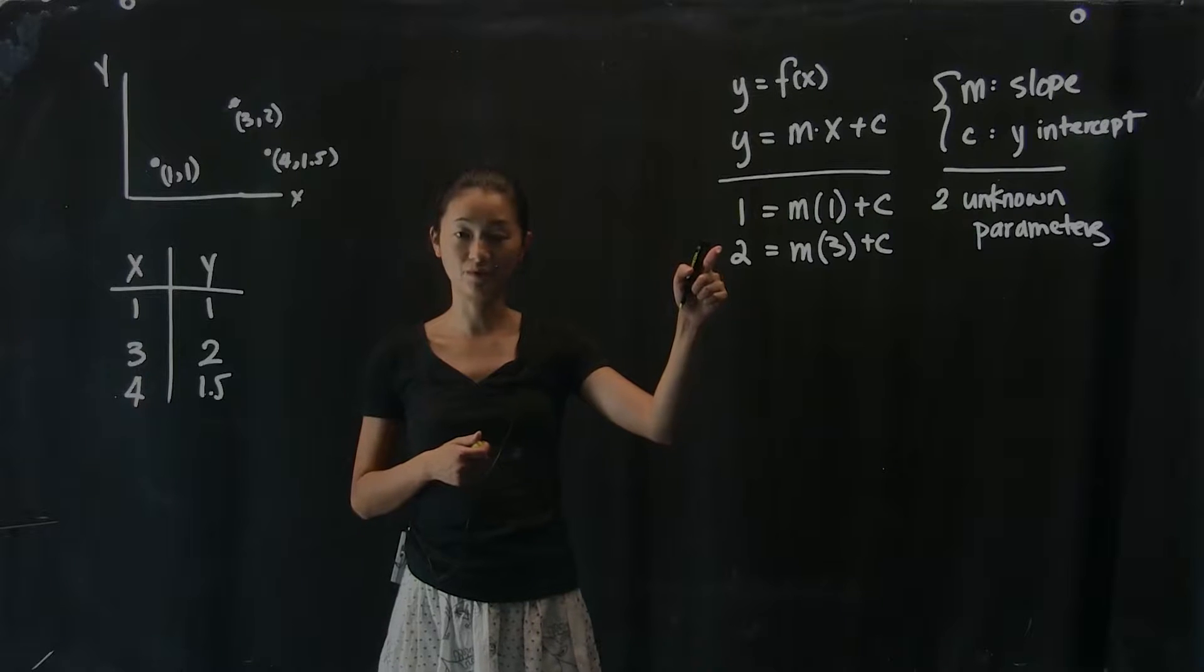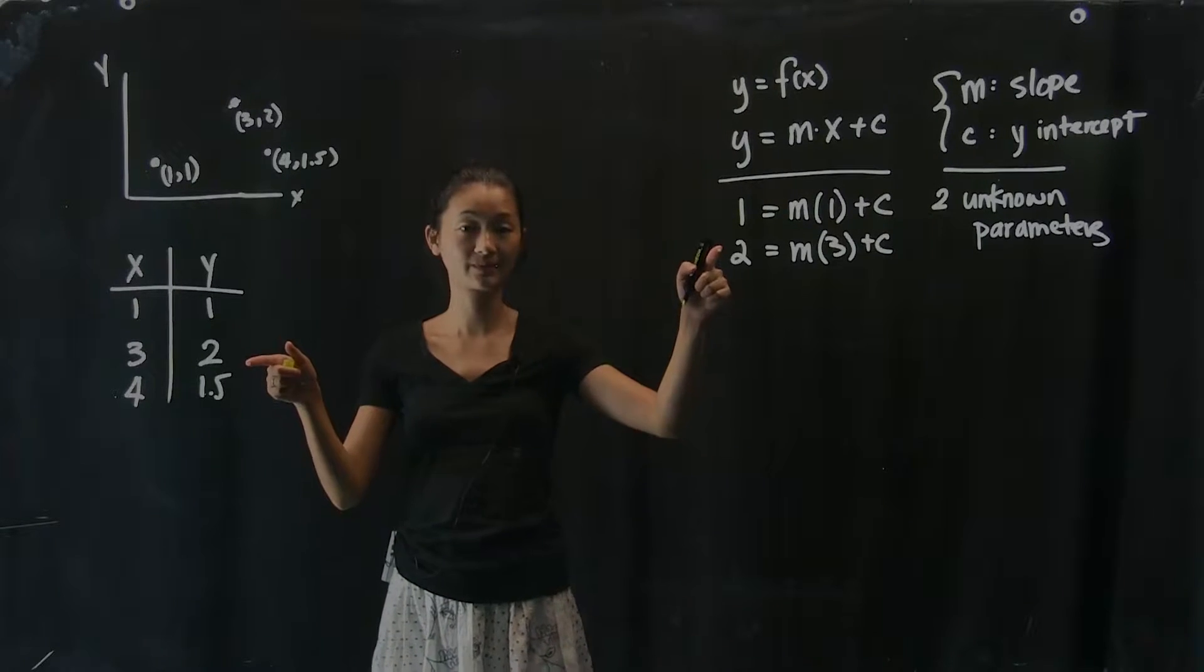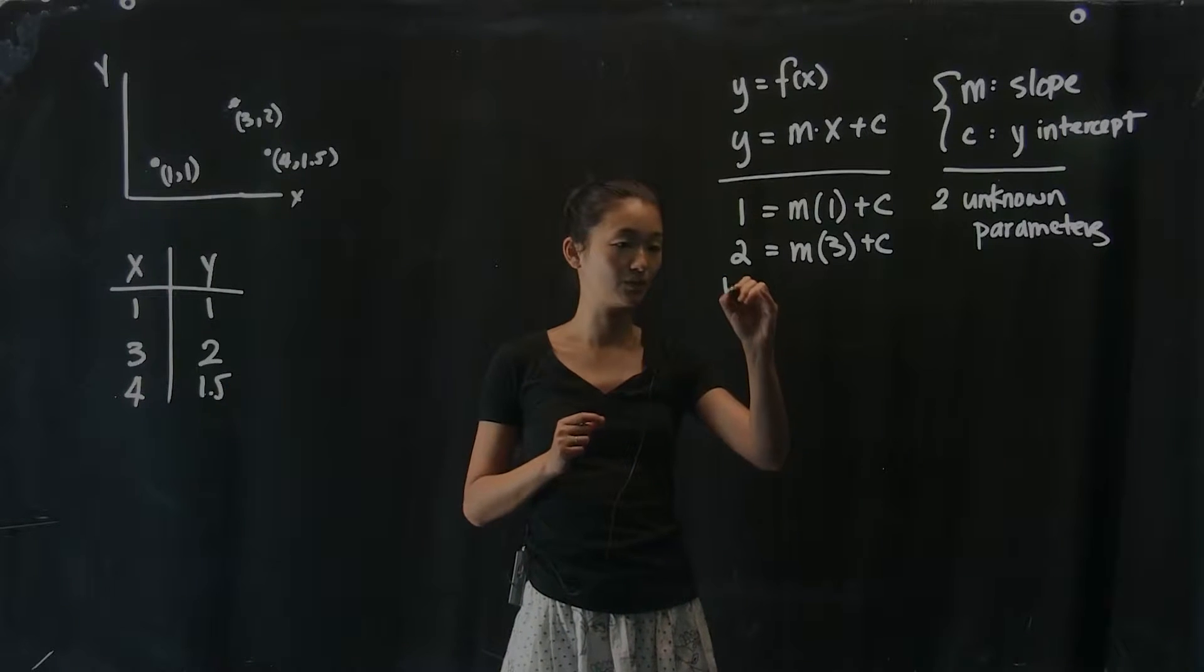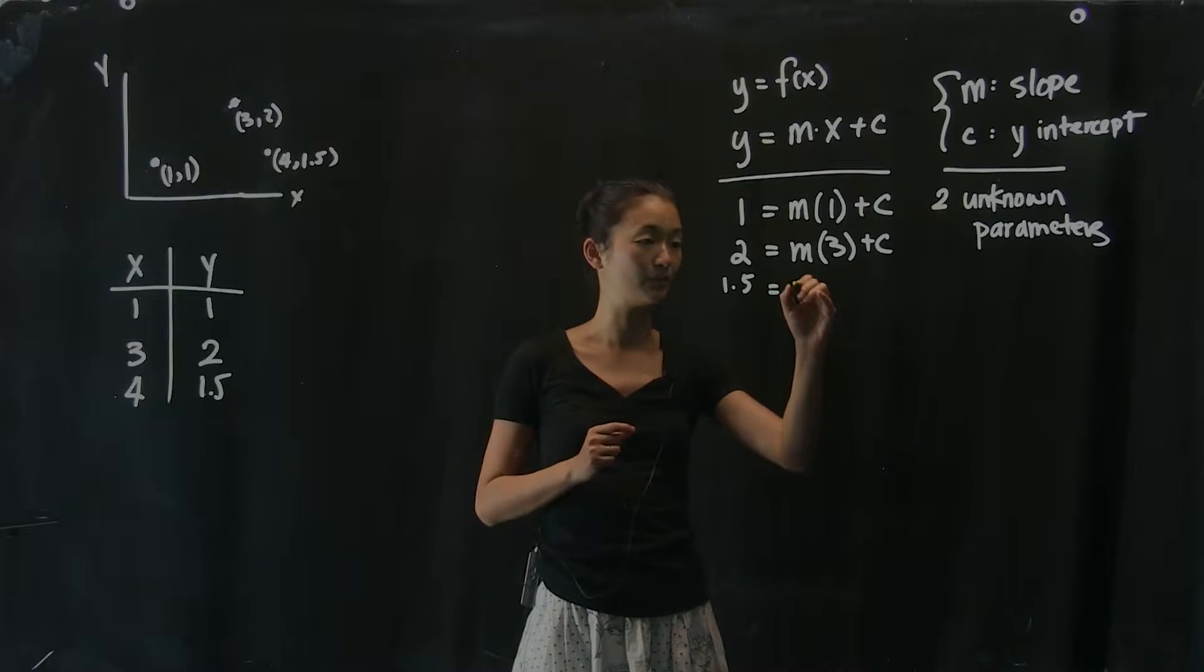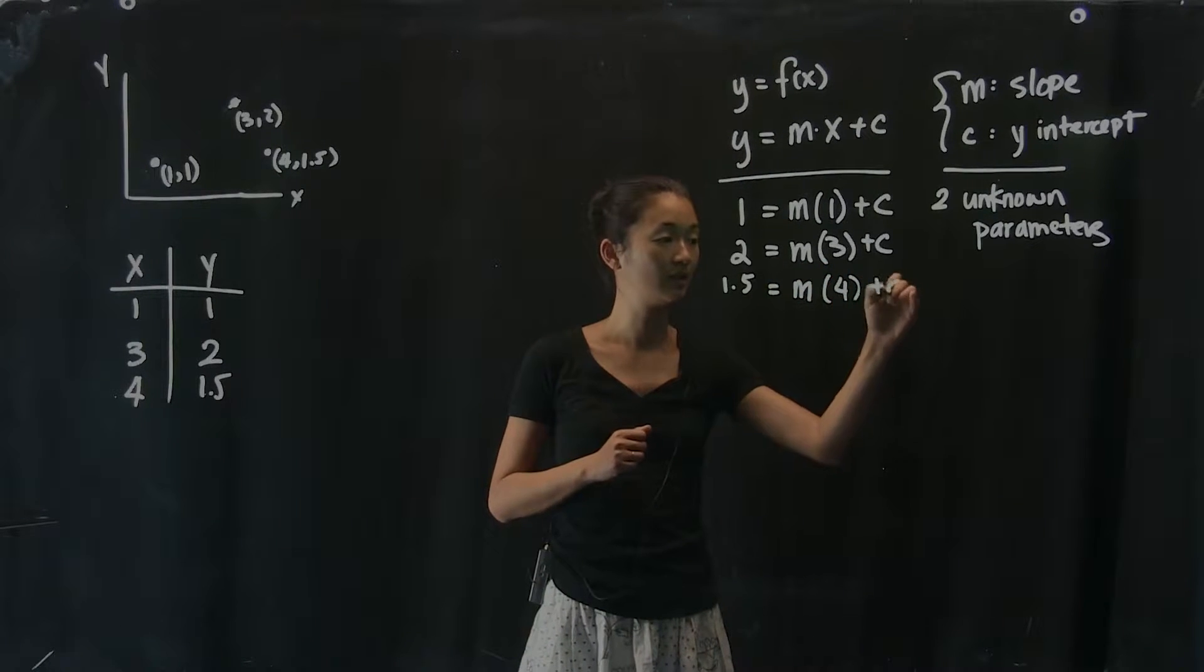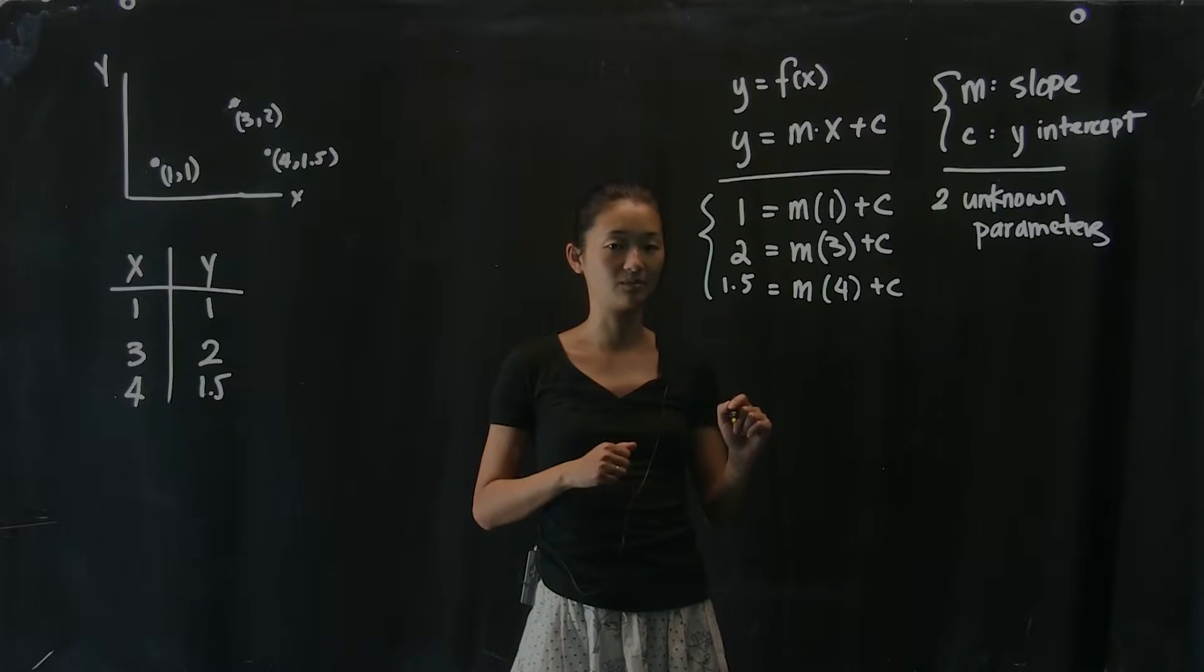Now, we have these two equations before, which are the equations that accommodate our first two points, and I'm going to write another one that accommodates the third point. So y equals 1.5 equals m, the same m, times 4, plus c.